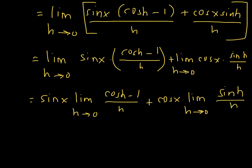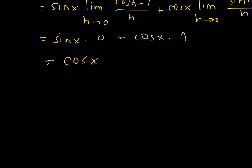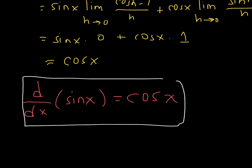We've talked about these important limits before: the limit as h approaches zero of cosine of h minus one over h equals zero, and the limit as h approaches zero of sine of h over h equals one. So this becomes sine of x times zero plus cosine of x times one, which means f prime of x is simply cosine of x. The derivative of sine of x is equal to cosine of x.